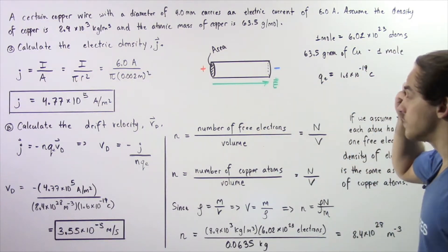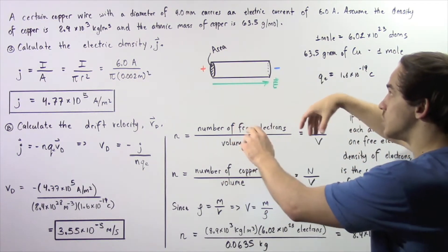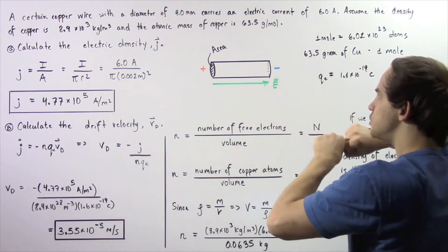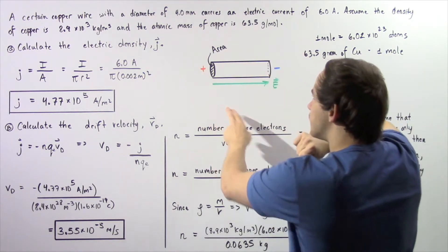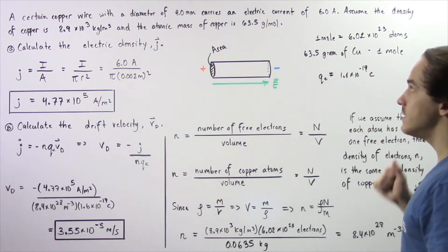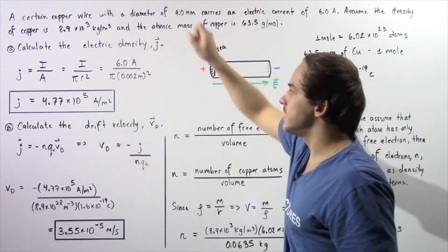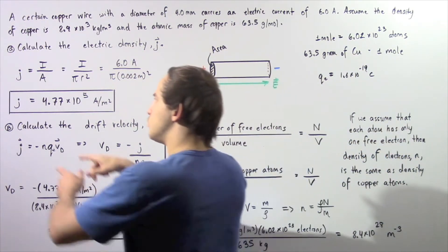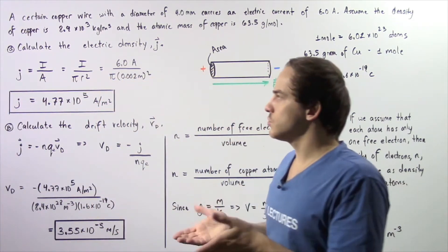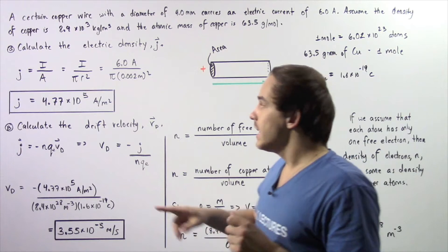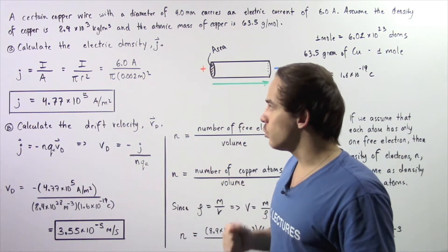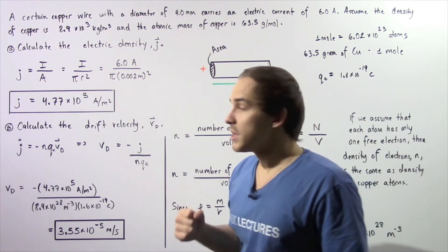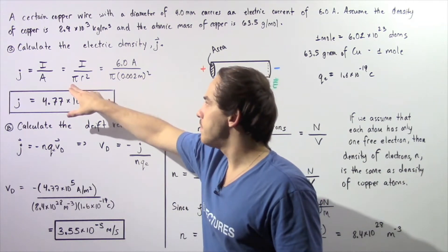Let's begin with part A. We're taking a section of our copper wire, which is assumed to be cylindrical in shape, so the cross-sectional area is given by pi r squared, where r is our radius — half of our diameter. To find our electric density, we use the equation shown in the previous lecture: J, the electric current density, is equal to the ratio of electric current I divided by the area.